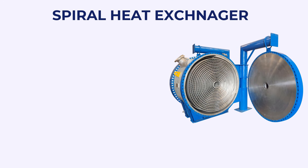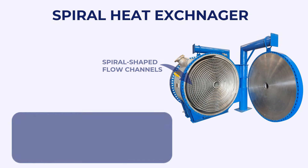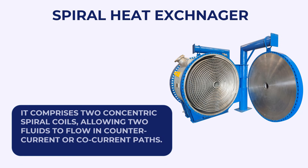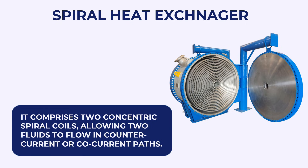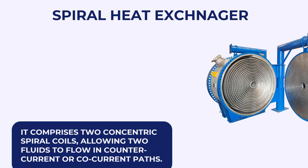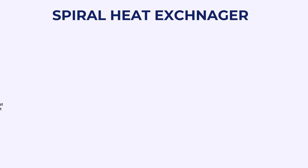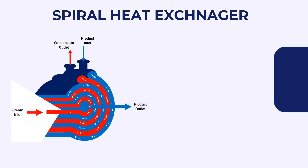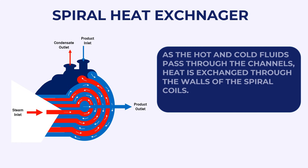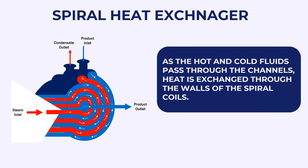Spiral Heat Exchanger. A spiral heat exchanger is a type of heat exchanger characterized by its spiral-shaped flow channels. It comprises two concentric spiral coils, allowing two fluids to flow in counter-current or co-current paths, facilitating efficient heat transfer between them. As the hot and cold fluids pass through the channels, heat is exchanged through the walls of the spiral coils.